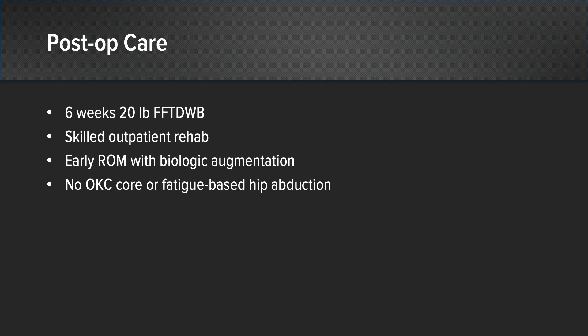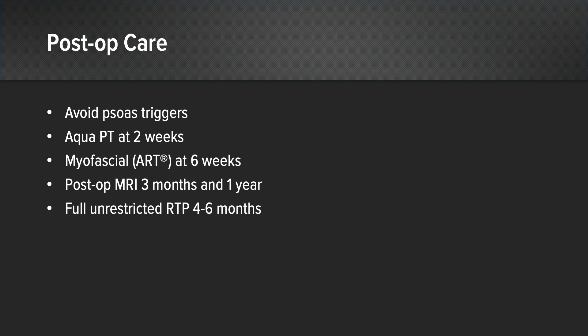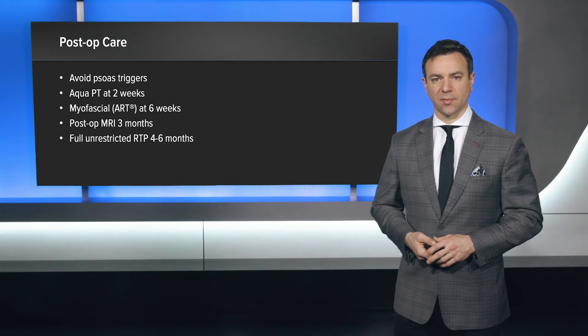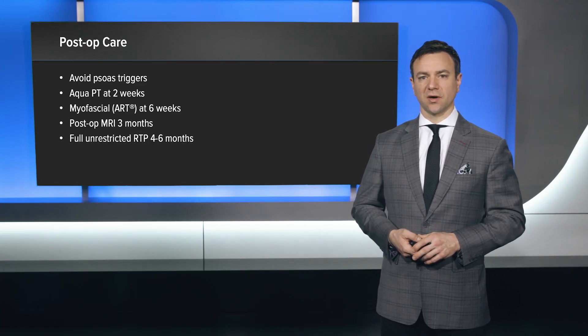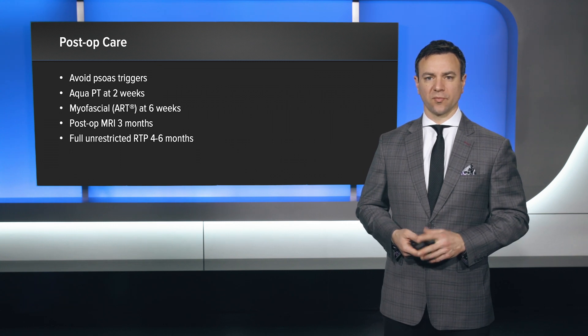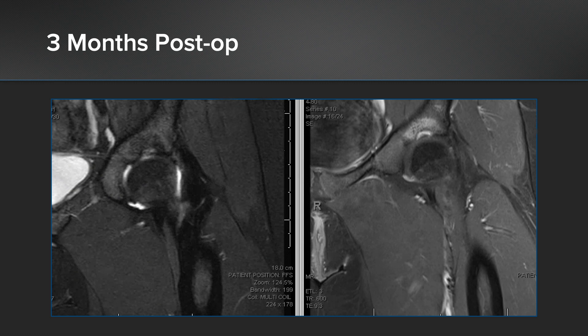This should be under the direction of a skilled hip rehabilitation team, avoiding specific psoas and abductor triggers, which tend to include open kinetic chain core fatigue-based hip abduction retraining. Early on, we often institute aquatic therapy at about two weeks to reduce the post-operative infection risk, and add myofascial-based techniques at six weeks. In this case, we obtained a post-operative MRI at three months to evaluate healing of the repair construct and to ensure that no further progression was occurring. We were excited to see at three months post-op that there was significant resolution in surrounding marrow edema, good incorporation of the graft material into the cyst, no progression of the lesion, and stabilization of the surface articular cartilage.